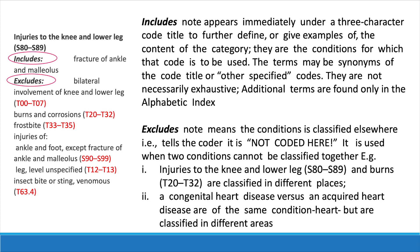Excludes notes, on the other hand, mean the condition is classified elsewhere — i.e., it tells the coder it is not coded here. It is used when two conditions cannot be classified together. For example: injuries to the knee and lower leg, S8–S89, and burns, T20 to T32, are classified in different places. Also, a congenital heart disease and an acquired heart disease refer to the same organ, heart, but are classified in different areas. Note that for each excluded term, in parentheses, is a category or subcategory code to which the excluded term should be allocated.